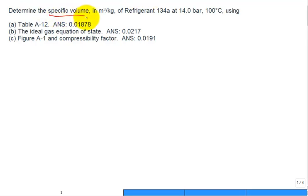Determine the specific volume in meter cube per kilogram of Refrigerant 134A at a given pressure of 14 bar and 100 degrees C using three different methods A, B, and C.